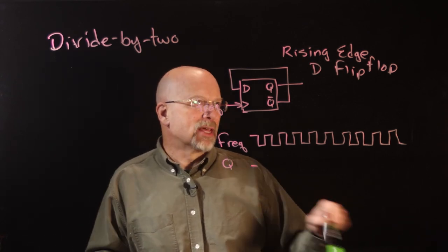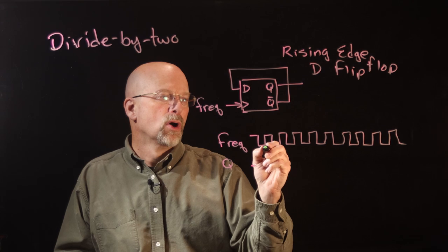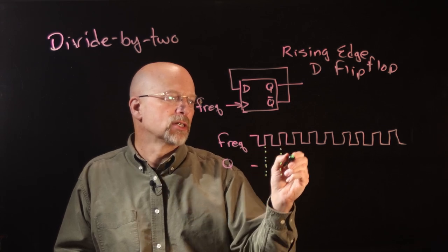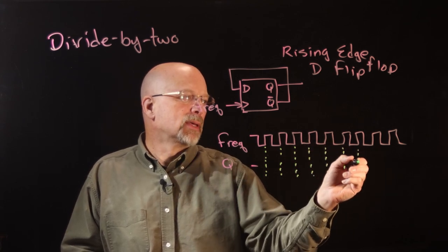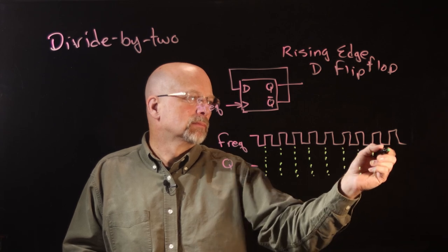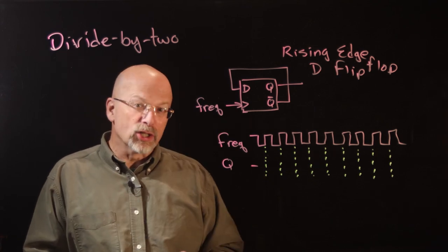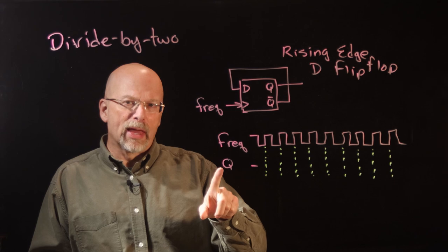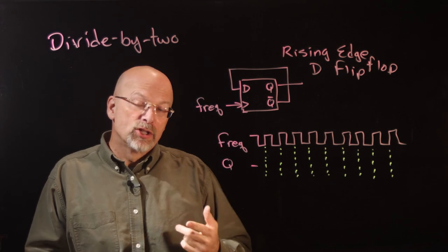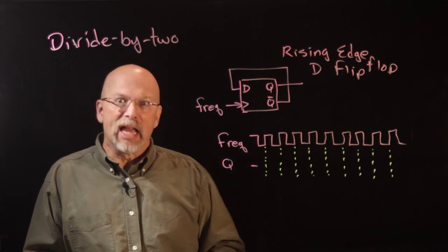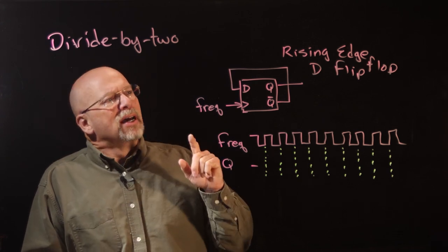The idea is that with a rising edge latch, we are going to copy D to Q on each one of these rising edges. So I'm going to mark all the rising edges here to show when we're going to be doing that copying. So that's when we're going to copy. But the question is, what are we copying? Well, remember that Q, whatever Q contains, the opposite of what Q contains is coming on Q bar. So input into D is the opposite of what's currently stored inside the D flip-flop.